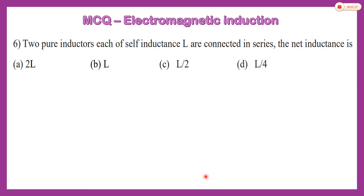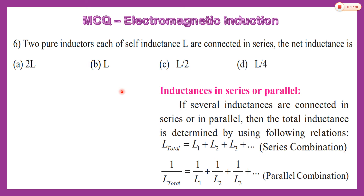The sixth MCQ: two pure inductors each of self-inductance L are connected in series — what is the net inductance? Just like resistance in series and parallel, inductance in series gives a sum. When inductances are connected in series we add them to get the total, which is maximum.